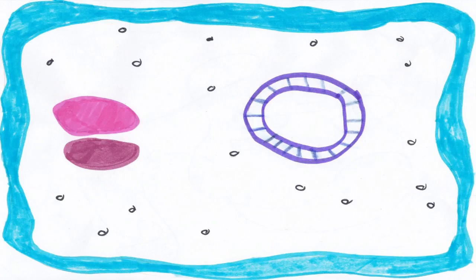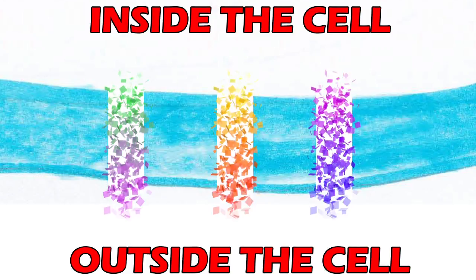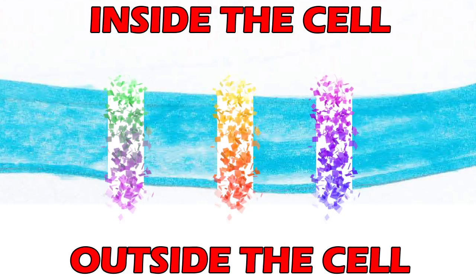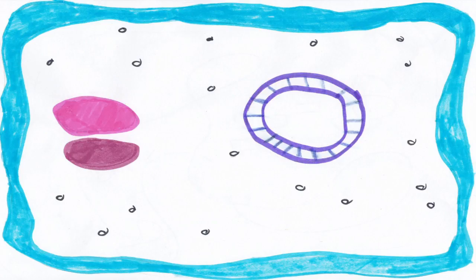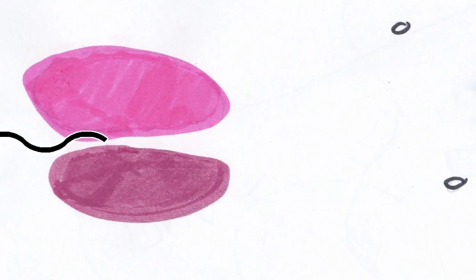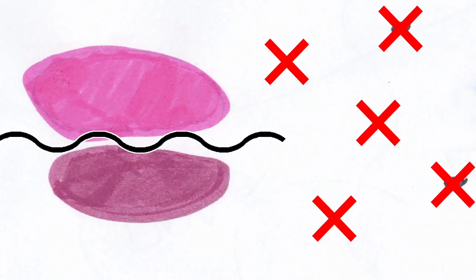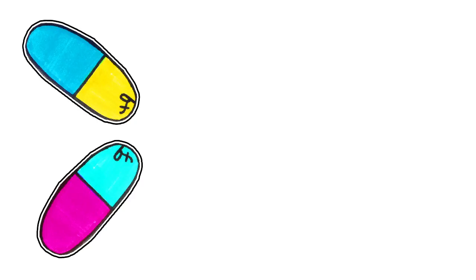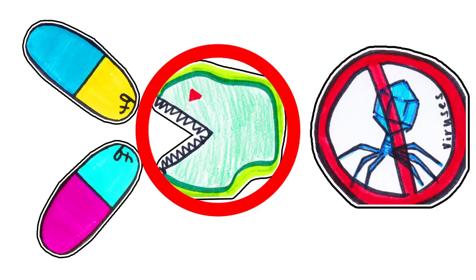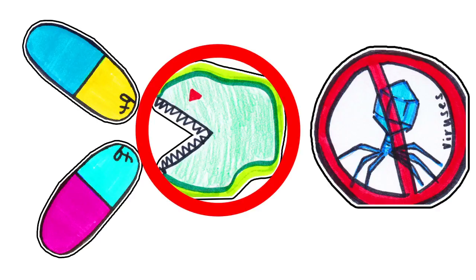For example, antibiotics can target the bacterial cell wall, increase its permeability, and allow a lot of particles and molecules to leave the cell, thus killing the bacterial cell. Antibiotics can also reduce protein synthesis by inhibiting ribosomal subunits and other metabolic mechanisms. But most importantly, antibiotics will only kill bacteria, not viruses — because viruses are acellular organisms with different structures.